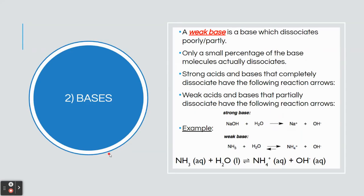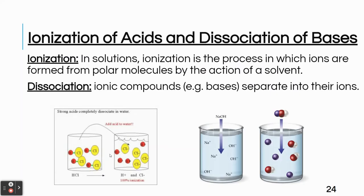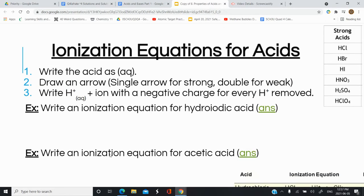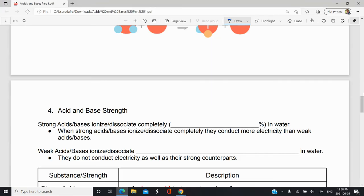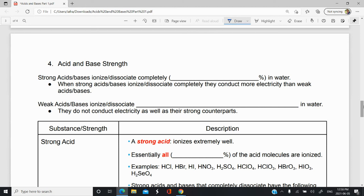So we learned about the strengths of acids and bases. Let's summarize on our handout. Strong acids and strong bases ionize or dissociate completely in water — 100% of what you put in becomes ions. That's why strong acids and bases are better at conducting electricity in solution than weak acids and weak bases, which do not ionize 100% in water. Weak acids and weak bases ionize or dissociate only partially — less than 100%.